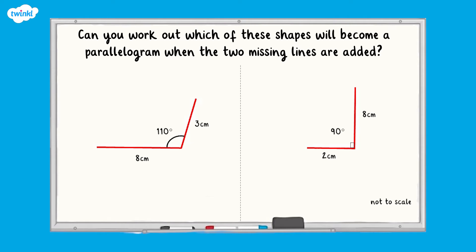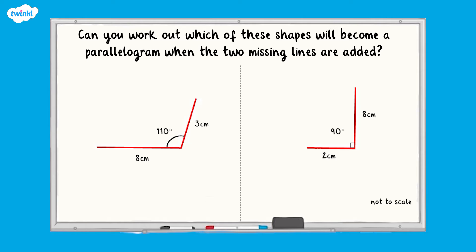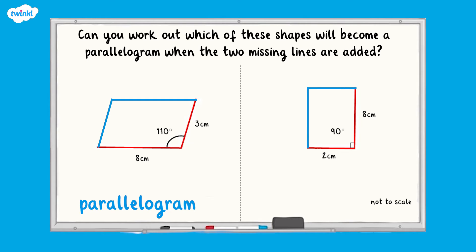Now it's over to you. There are two lines missing from each of these partly drawn shapes. Can you work out which will become a parallelogram when the two missing lines are added? The first shape is the parallelogram — we know this because there are two pairs of opposite equal angles and two pairs of equal parallel lines. The second shape is a rectangle because all the lines meet at 90 degrees. This was a bit of a trick question, as the rectangle is a special type of parallelogram.